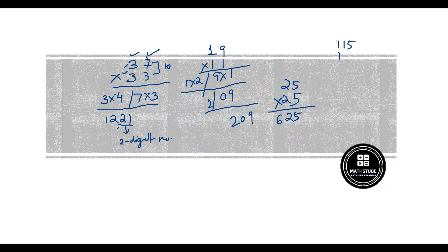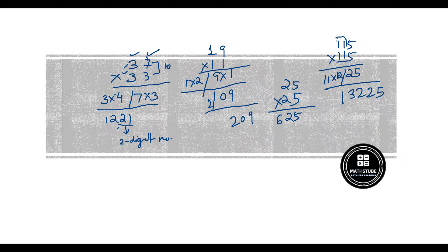You can also apply this to bigger numbers — for example, 115 into 115. Here 5 fives are 25, and 11 into 12 gives 132. So answer is 13225. Easy! In the first trick, the condition is: tens places are same and the sum of the ones digit should be 10. The first trick is over.